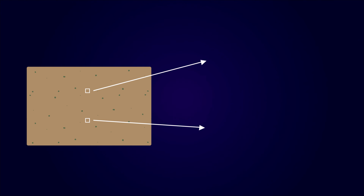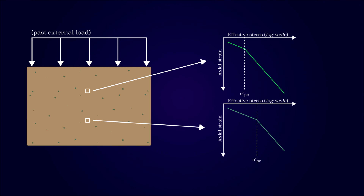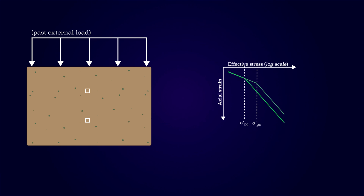The pre-overburden pressure can be advantageous in multiple scenarios compared to the overconsolidation ratio. If multiple odometer tests are performed at different depths in a soil volume, they will show a different pre-consolidation stress. The pre-consolidation stress will equal the effective in-situ stress plus the external load. If the pre-consolidation stress is compared for the two odometer curves, it will be offset by the difference in effective in-situ stress.